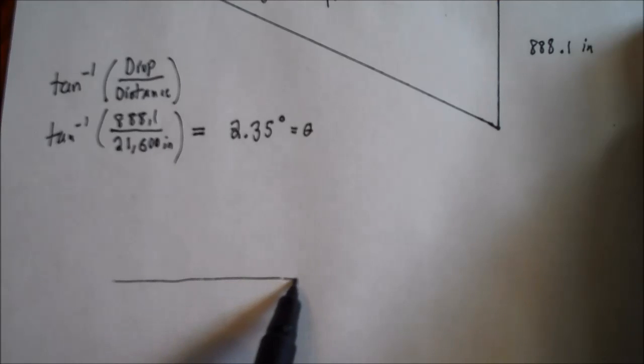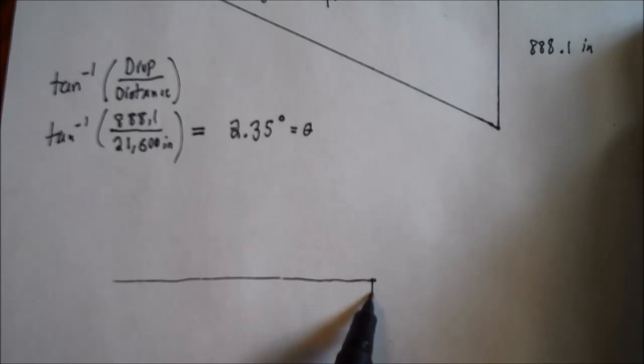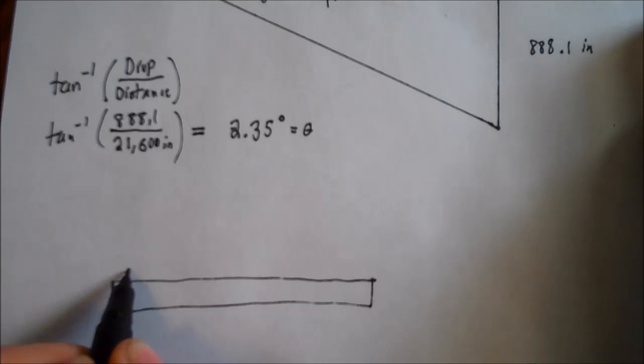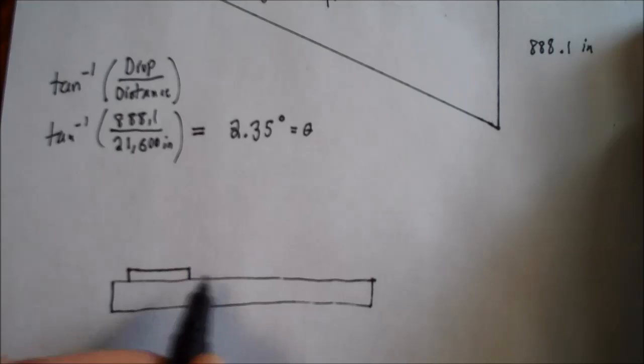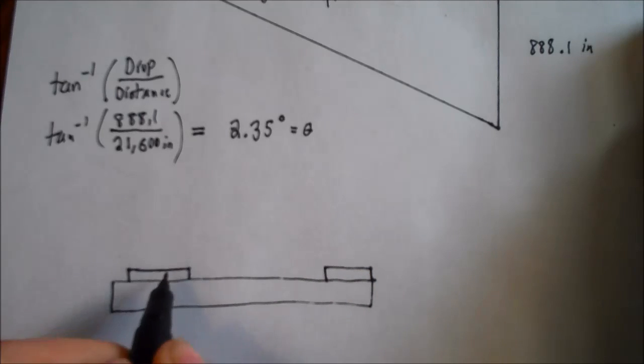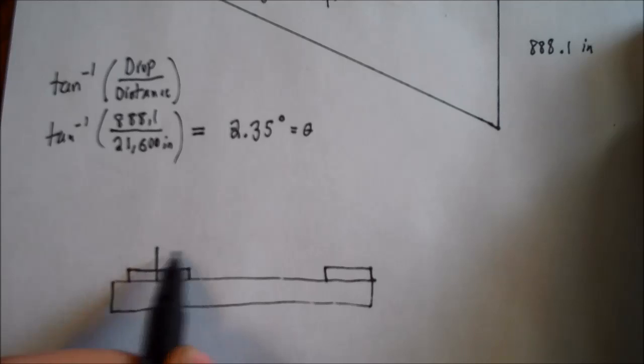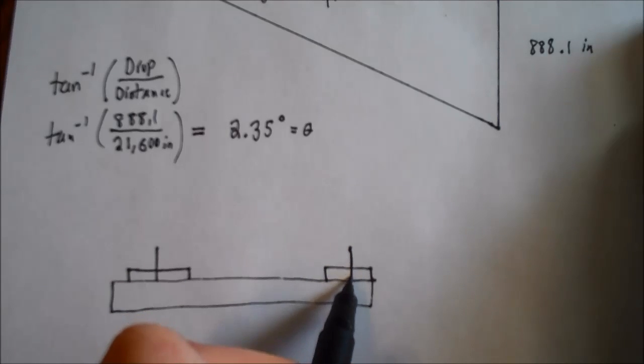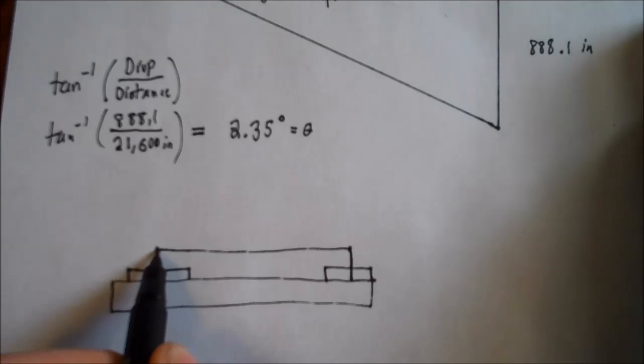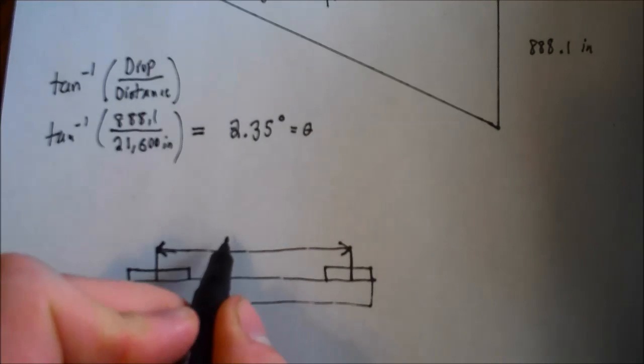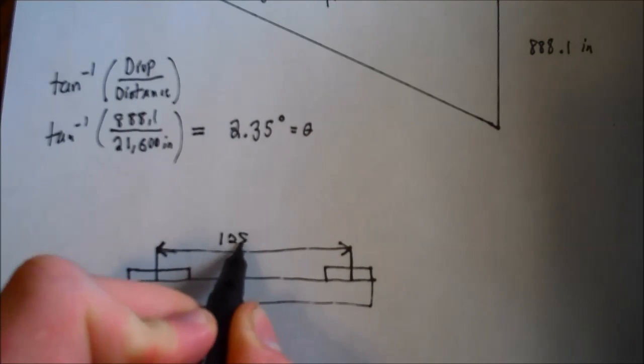Okay. And let's say here's your first scope mount, and here's your second scope mount. So you need to figure out the distance between the centers, or the distance between the exact center of the rear scope mount and the other center of the front scope mount. So you want to measure that. And once you measure that, let's say in one case it was 125 millimeters.